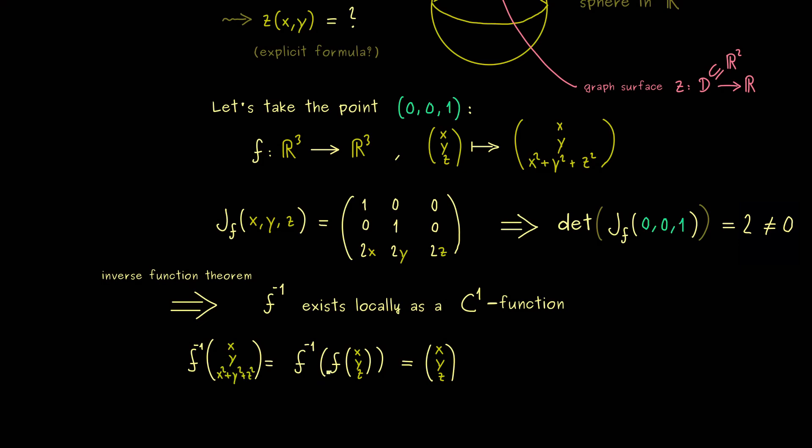And now we also know that this inverse here works for a whole open subset in R³. Hence it also works if we restrict it to our sphere. Hence what we want is what happens if we put (x, y, 1) into the inverse function. Because there we know that for each x and y this point lies on the sphere.